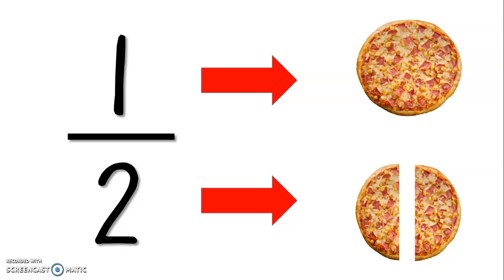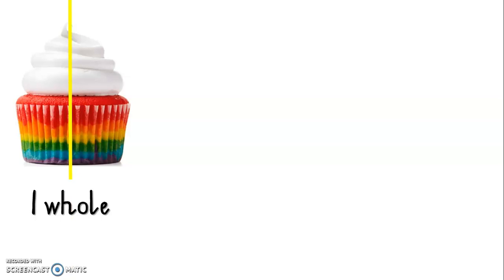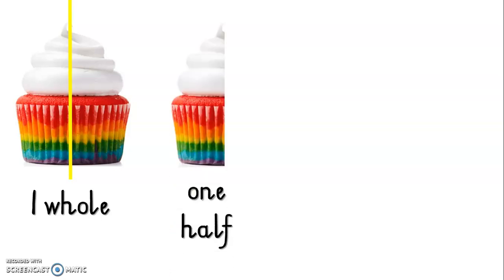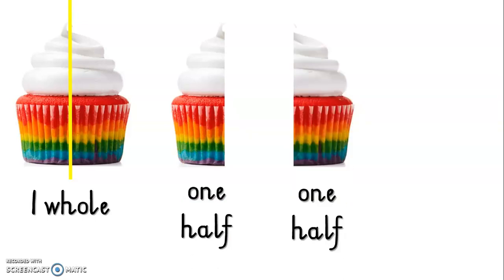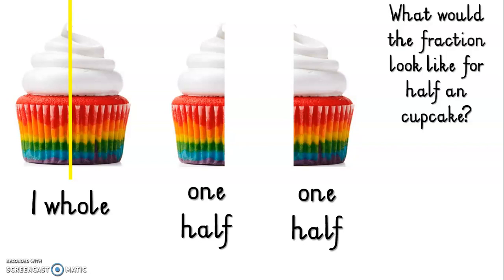Let's see if we can half other things. A cupcake. Here is one whole cupcake — how delicious. I want to share my cupcake in half. Do you see? I shared my cupcake in half. What will it look like? Here is one half of the cupcake. Here is the other half of the cupcake. How many pieces did I divide the cupcake into? Very good — two pieces. So I've got one whole and two halves. What would the fraction look like for half a cupcake? Very good — it would be one over two. And one over two means half. That number name means half.